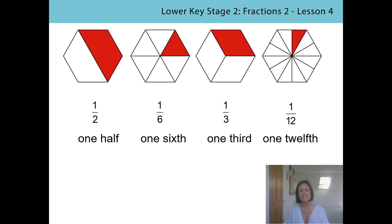What do you notice is the same about all of the fractions that you've written down? Did you spot? All of those names start with the word one. But can you explain why that is? Why do all the fraction names start with the word one? Of course, it's because the numerator in each of the fractions is also one, and that's because only one part of each of the whole shapes has been shaded each time. Well spotted.